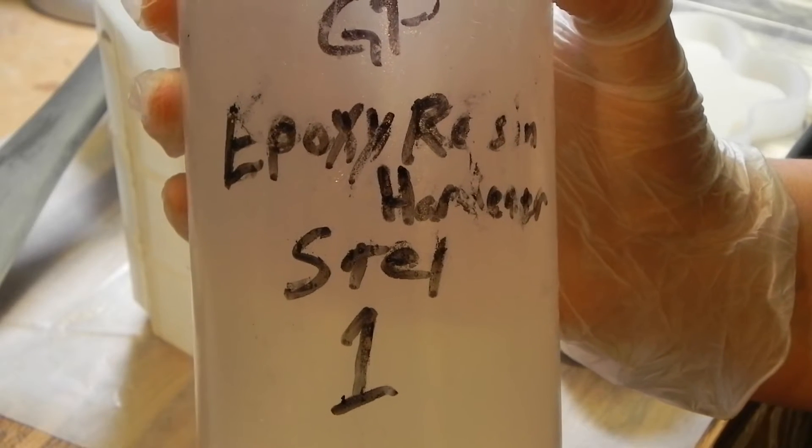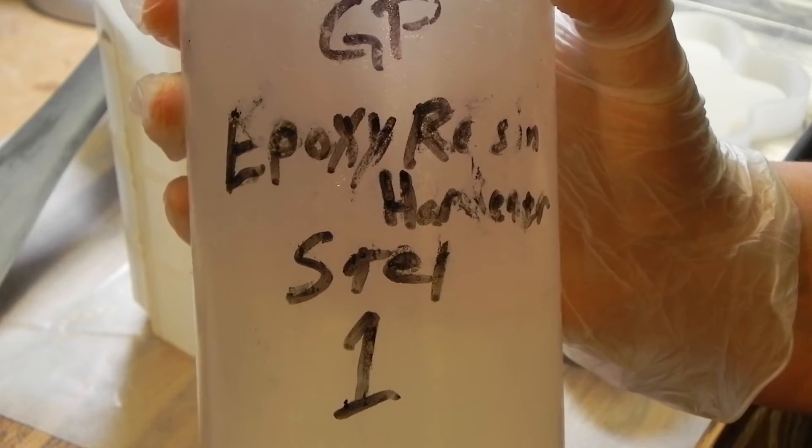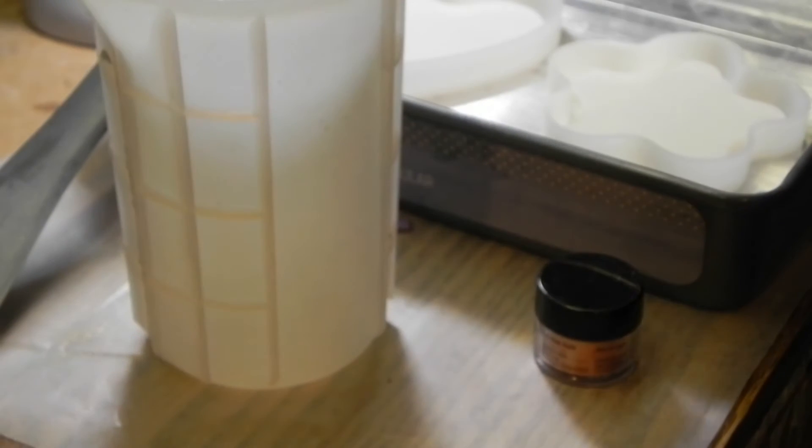Always pour hardener first. This is the thinner fluid and will allow for better mixing. I'm using a general purpose resin which is one-to-one. I'll be doing a larger pour of multiple coasters and I want to slightly overshoot the amount needed, so I'm using the larger silicone mixing cup. I need 400 milliliters, so I need 200 milliliters of the hardener first.